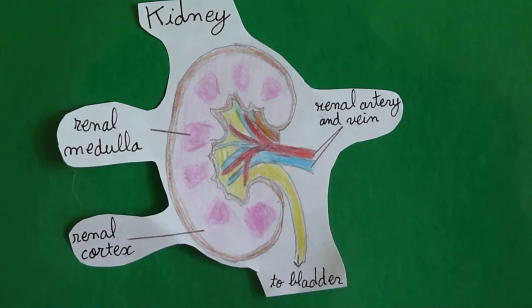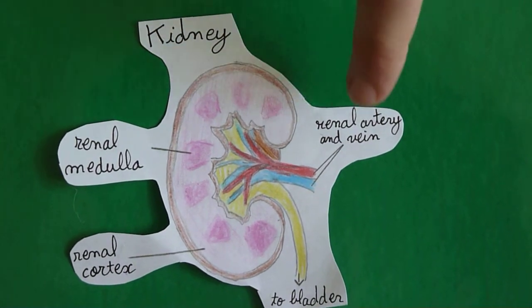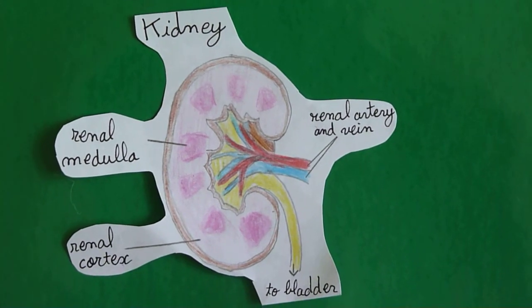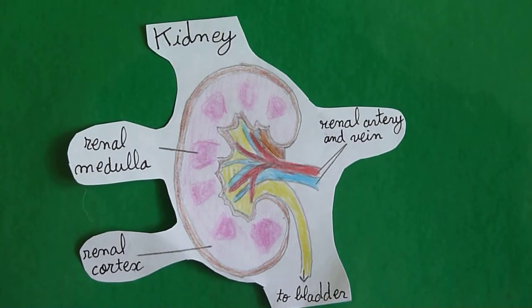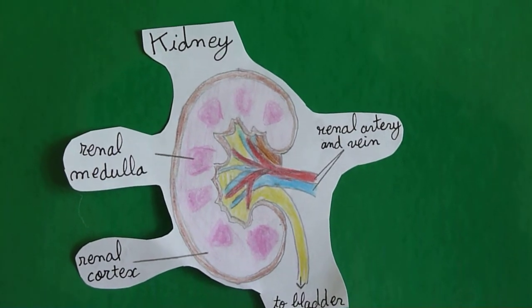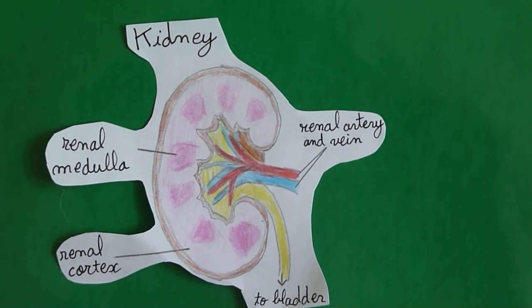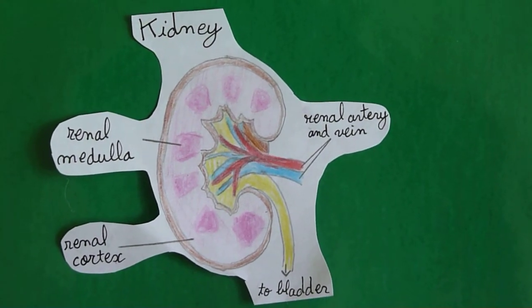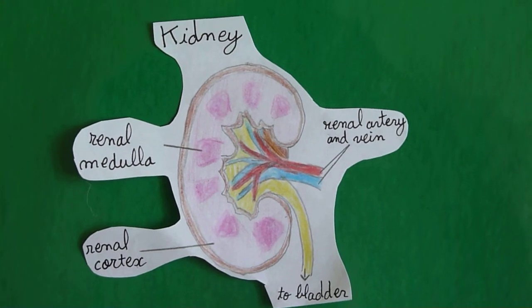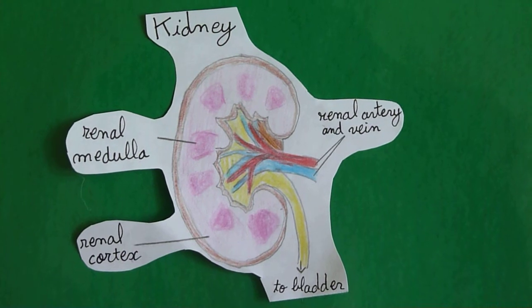We also have the renal vein, which drains the filtered blood away from the kidney. Then the renal pelvis is also in this area, and it collects urine, the fluid product produced by the kidneys, and it consists of water and dissolved waste products. Urine then drains from the renal pelvis to the ureter, which takes it to the bladder. The tissue that surrounds the renal pelvis is called the renal medulla, which is covered by the renal cortex.